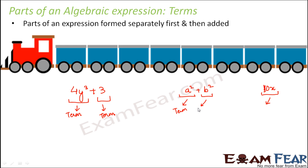Each part of this algebraic expression is called a term. So here also a² is a term, b² is a term. In this case, this expression has only one term and that is 10x. Let's take some more examples.